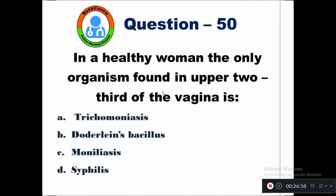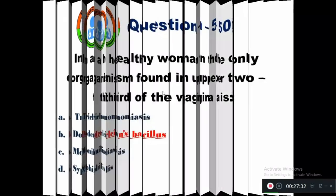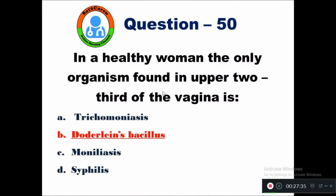Question 50: In a healthy woman, the only organism found in the upper two-thirds of the vagina is — option A Trichomonas, B Döderlein's bacillus, C Moniliasis, D syphilis. In a healthy woman, the only organism found in the upper two-thirds of the vagina is Döderlein's bacillus. Option B is the right answer.